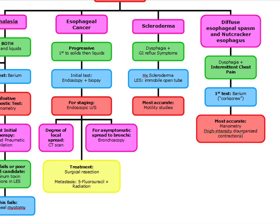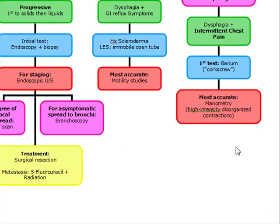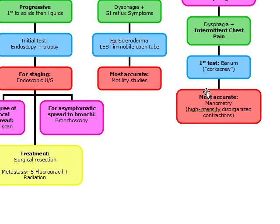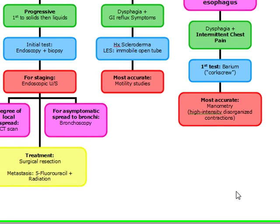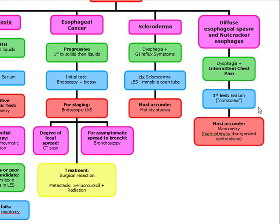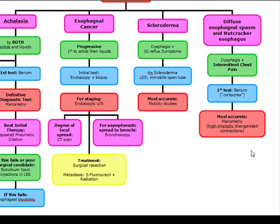Therapy for diffuse esophageal spasm is nifedipine — calcium channel blockers. If calcium channel blockers are not in your choices, nitrates can also be used. This is similar to Prinzmetal's angina, which also comes with intermittent chest pain — and we use the same treatment: calcium channel blockers, preferably nifedipine, as well as nitrates.